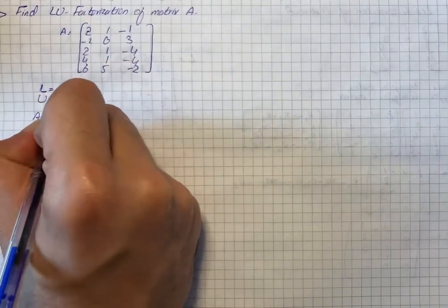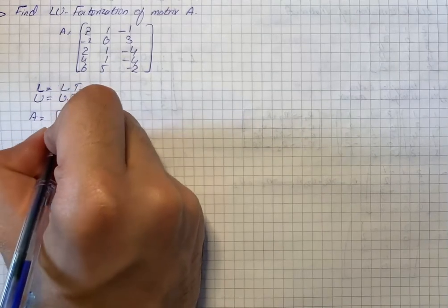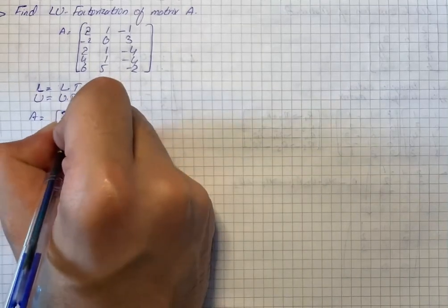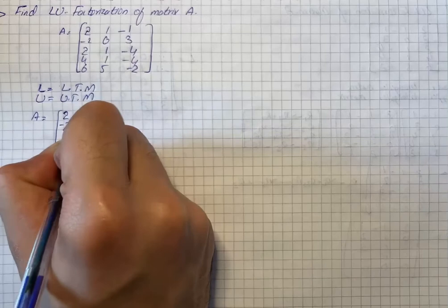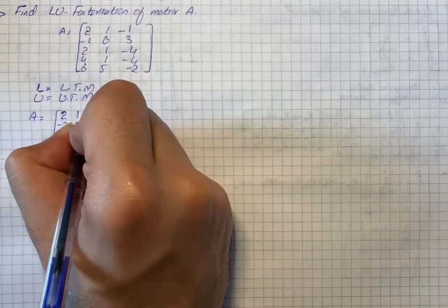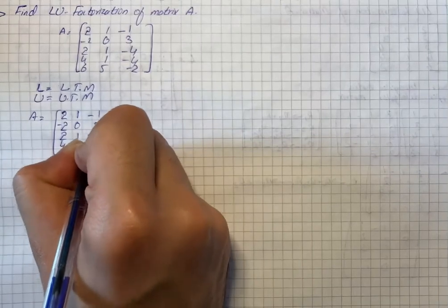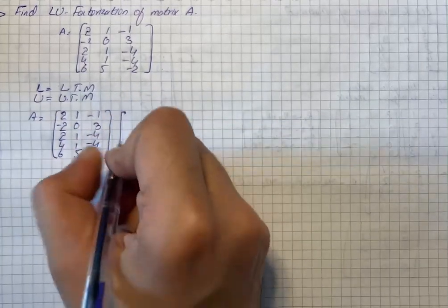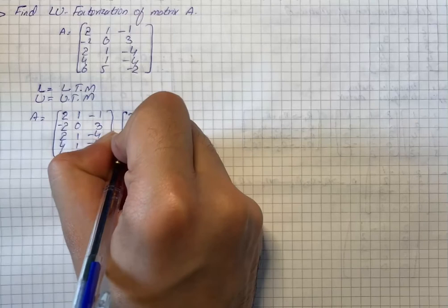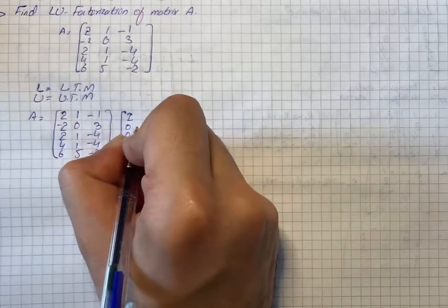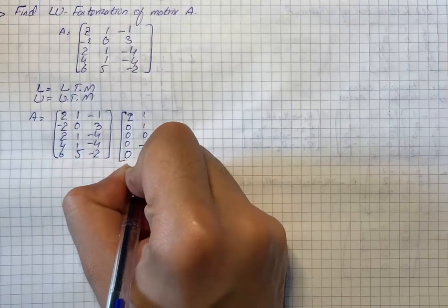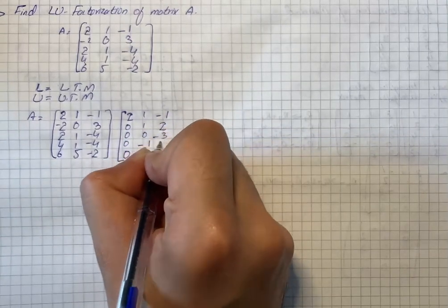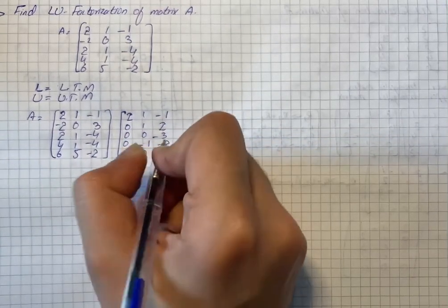We have A equals to 2, 4, 6, minus 1, 3; 1, 0, 1, 1, 5; minus 1, 3, minus 4, minus 4, minus 2. Into 2, 0, 0, 0, 0; 1, 1, 0, minus 1, 2; minus 1, 2, minus 3, minus 2, 1.